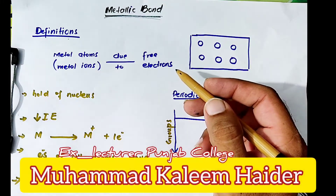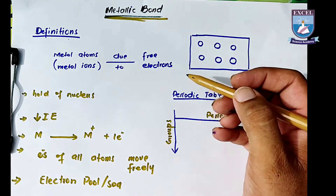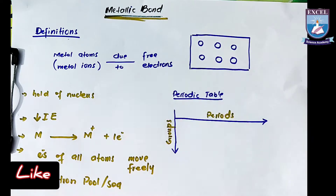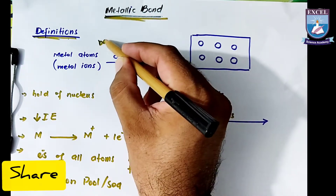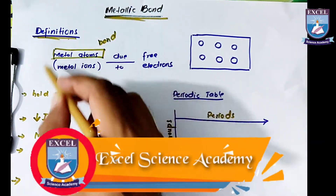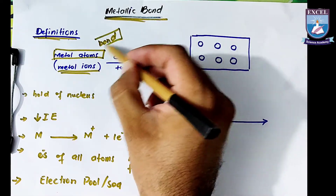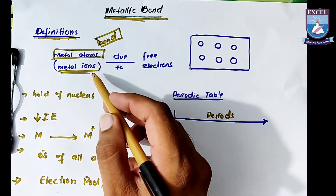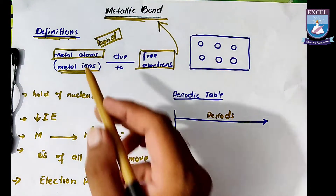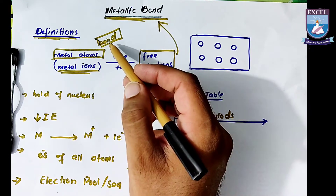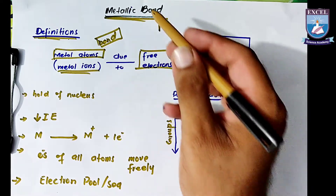Bismillahirrahmanirrahim, Assalamualaikum dear students. Our today's topic is metallic bond, and this topic is very simple and very interesting. First we will see its definition: this is a bond which is formed between metal atom and metal ions due to free electrons — that is called a metallic bond. Students, remember this definition from this sketch.